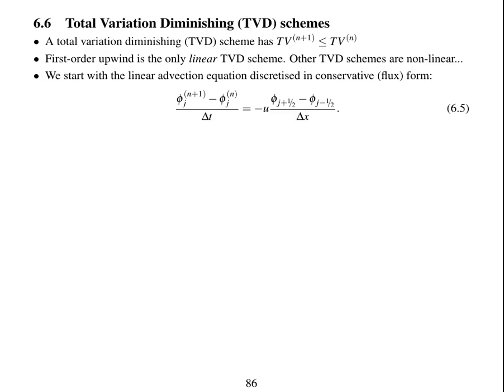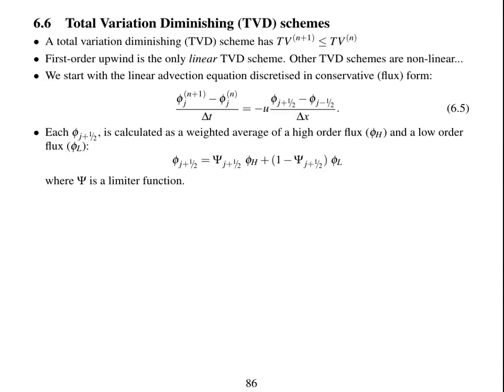We'll start with the linear advection equation discretized in conservative flux form. We have the rate of change of phi with time equal to minus u times the rate of difference in phi over a grid box divided by Δx.